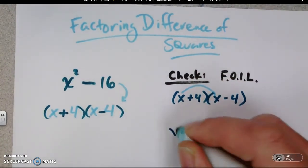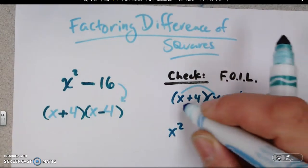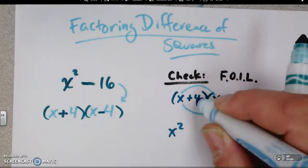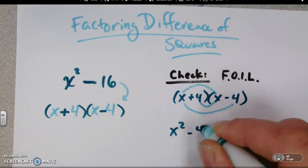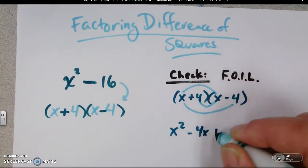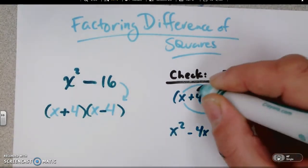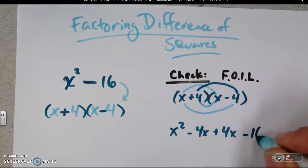x times x will give you x squared. x times minus 4 and 4 times x. The outside and the inside, one gives you minus 4x. The inside gives you plus 4x. And the last, 4 and 4 gives you minus 16.